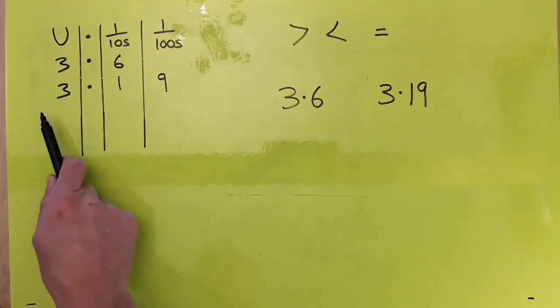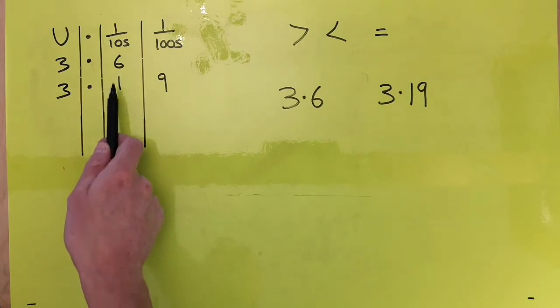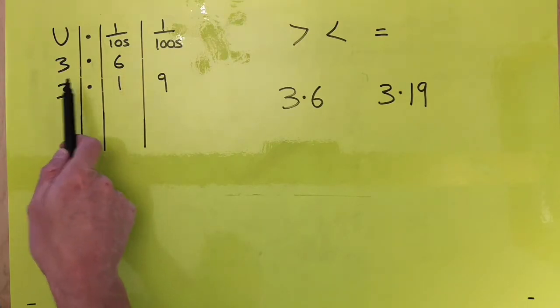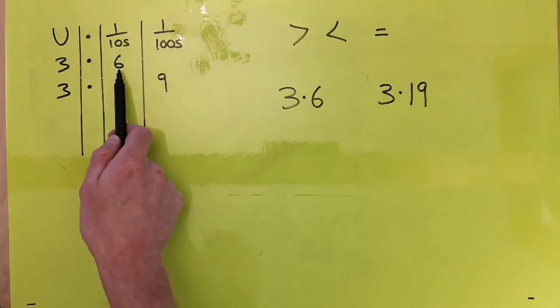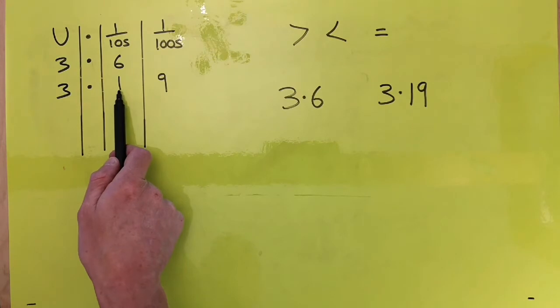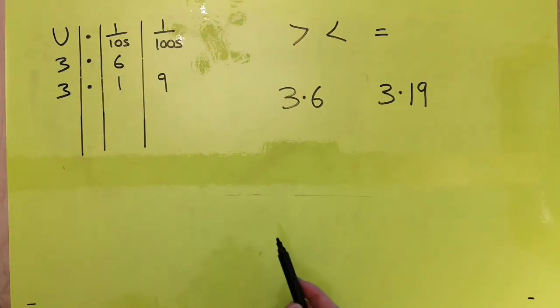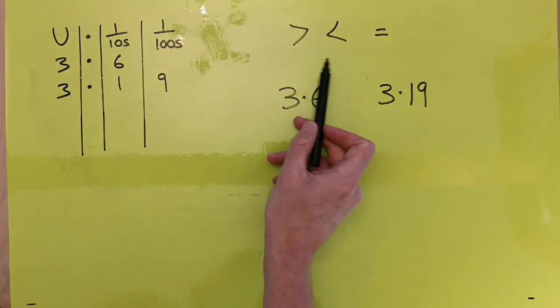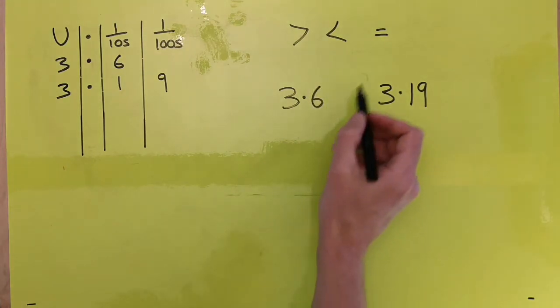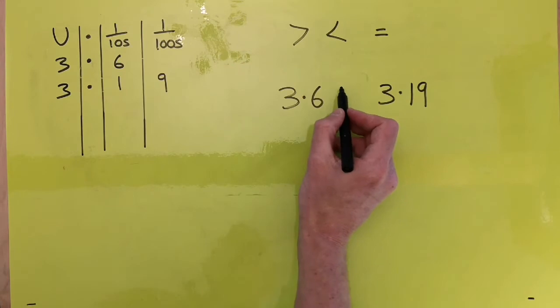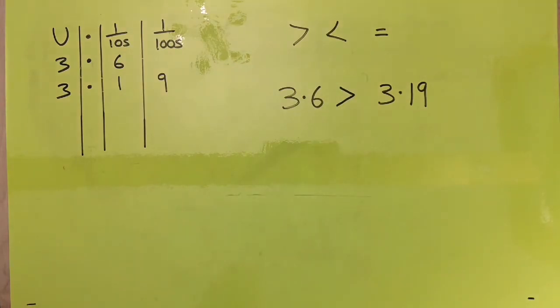So we then need to look to the next column of which side is the biggest. Now you can see that although this hasn't got any hundreds, it's got 6 tenths and this has only got 1 tenth. So it means that this number here, 3.6, must be the biggest. So putting in one of our greater than or equal signs, because it's obviously not equal, it's going to go that way. So let's try another one of those.